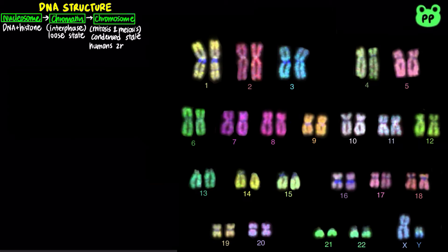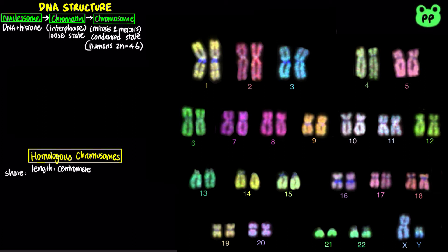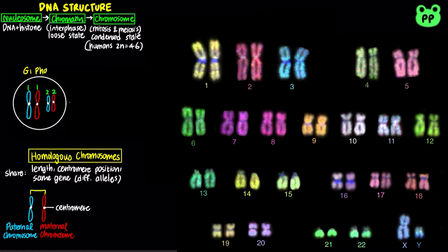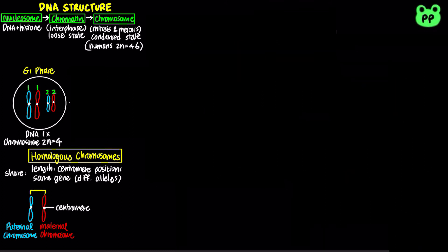Humans have 23 pairs of homologous chromosomes. Each pair consists of one paternal and one maternal chromosome, which share the same length, centromere position, and the same genes that contain different alleles. In this video, I will use a simplistic model with two pairs of chromosomes, represented as 2n equals 4.